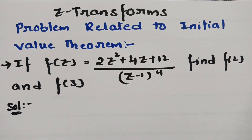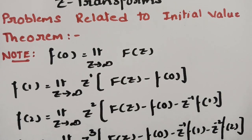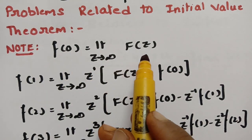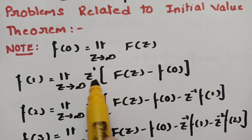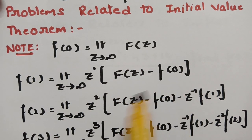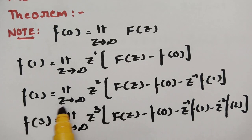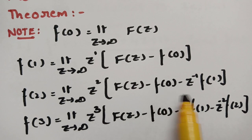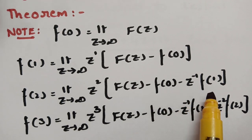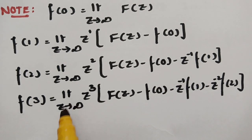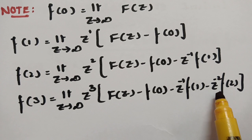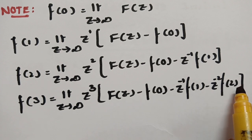In order to find these values, we have to remember the following formulas. For f(0): limit z→∞ of F(z). For f(1): limit z→∞ of z¹·[F(z) − f(0)]. For f(2): limit z→∞ of z²·[F(z) − f(0) − z⁻¹·f(1)]. For f(3): limit z→∞ of z³·[F(z) − f(0) − z⁻¹·f(1) − z⁻²·f(2)].